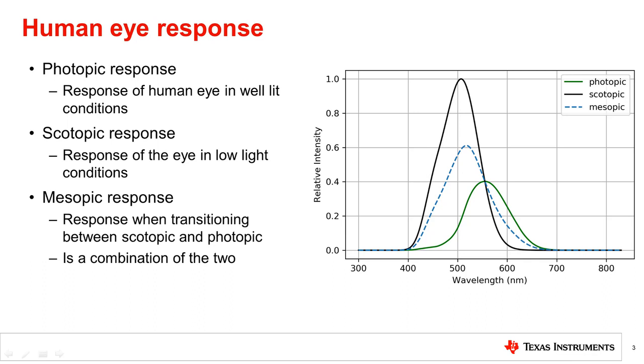The scotopic curve is shifted to the left and towards the shorter wavelengths when compared with the photopic curve. It also has a higher overall response because rods are more sensitive than cones.